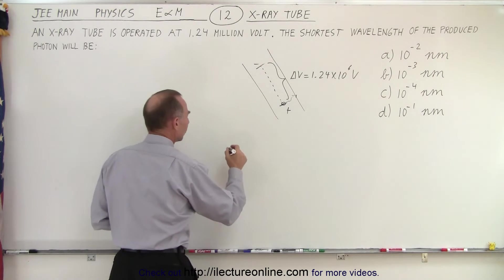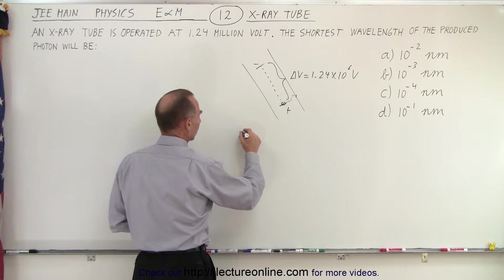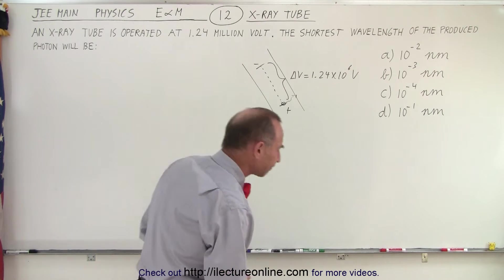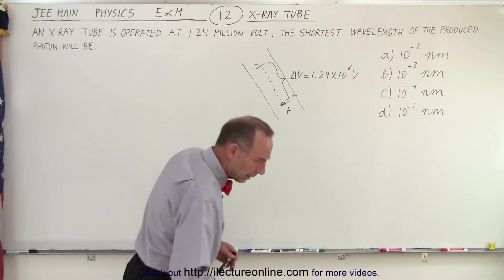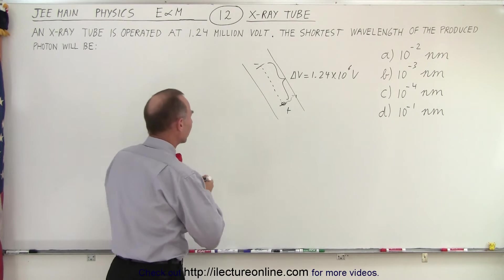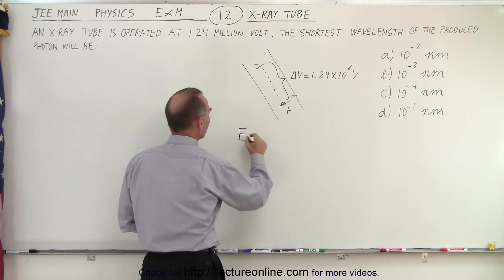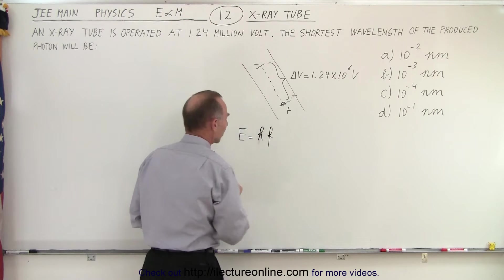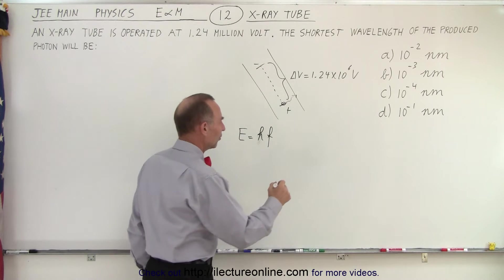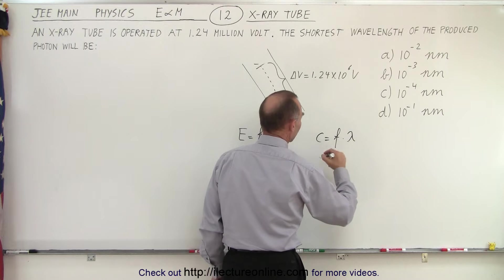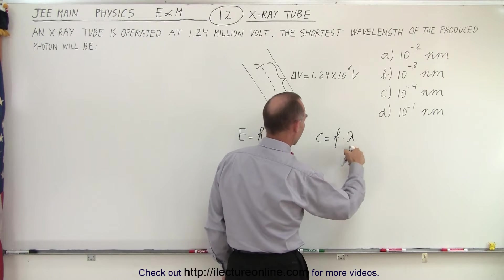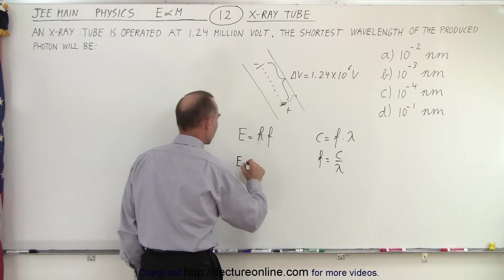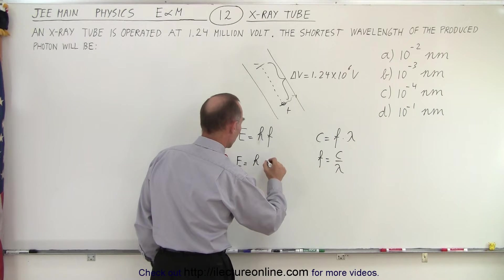The energy of a photon is equal to H times F — Planck's constant times the frequency. And since we know that the speed of light equals frequency times wavelength, C equals F times lambda, we can write F equals C divided by lambda. So the energy equals H times C over lambda.